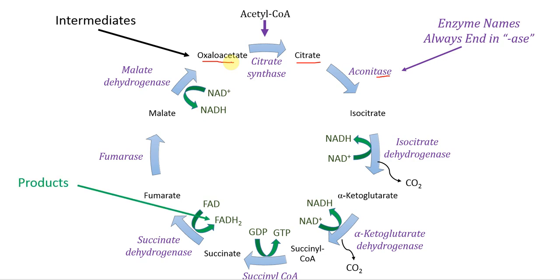The next part of the cycle are the products, shown here in green. You can tell that something is a product of the cycle because the arrow representing its production is going away from the cycle. For example, FADH2 is made and the arrow is pointing away from the cycle — it's not in the cycle itself. The products include NADH, FADH2, and GTP. Each turn of the cycle produces three NADH, one FADH2, and one GTP.